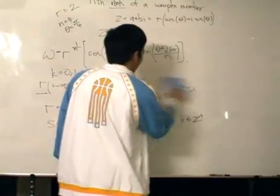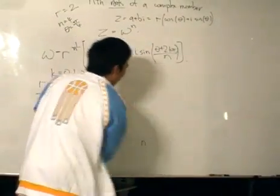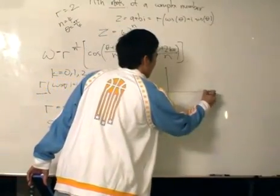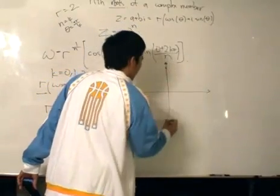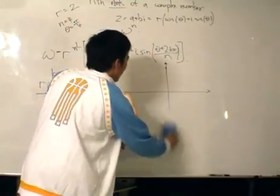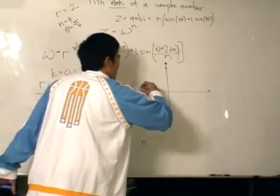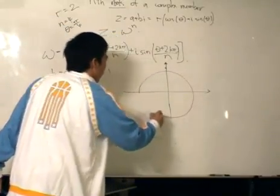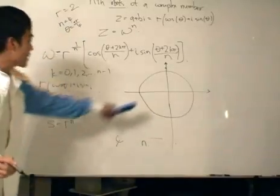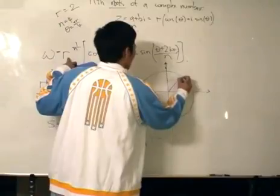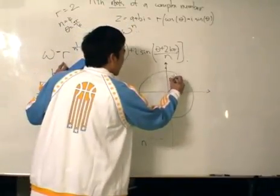Very quickly, on the graph. Complex plane of that, what do we get? Okay, what we get is a unit circle. Sorry, not a unit circle. We get a circle of the same magnitude, which is going to be r to the power of 1 over n.